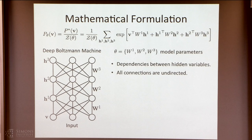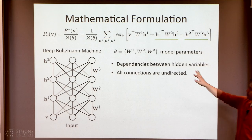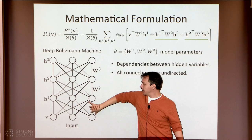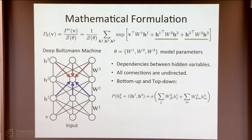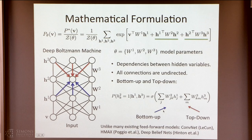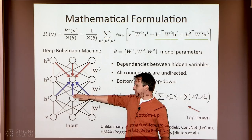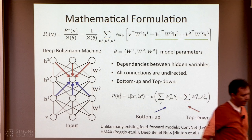Let me show you a couple of examples of these models. What you're doing is introducing dependencies between hidden variables, and all connections are undirected. In addition to pairwise potentials between variables, you're introducing additional terms modeling dependencies between H1 and H2, and H2 and H3 — multiple layers. If you want to compute the probability of a particular variable taking value one, it really depends on what's coming from above and what's coming from below. So you'll have to use some kind of approximate inference algorithm that ensures consistency between bottom-up and top-down.